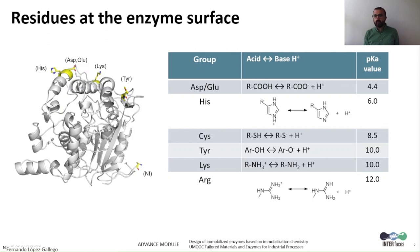Attachment of an enzyme to a carrier relies on well-exposed residues of different nature on the enzyme surface. For example, negatively charged amino acids like aspartic and glutamic are useful for cationic exchange. Histidines are useful for coordination with metal chelates. Cysteines are able to establish disulfide bridges. Aromatic amino acids and other aliphatic ones like leucine are useful for hydrophobic absorption, and lysines and arginines are good residues for ionic exchange.